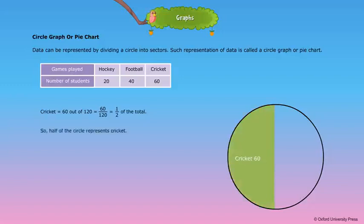So, half of the circle represents cricket. Football is equal to 40 out of 120 is equal to 40 by 120 is equal to 1 by 3 of the total.